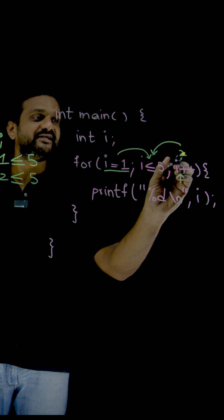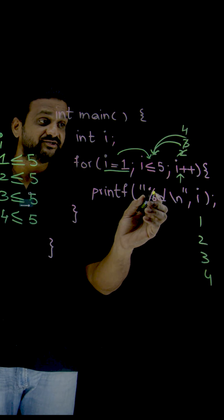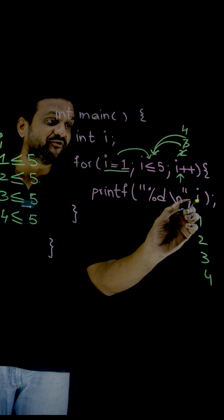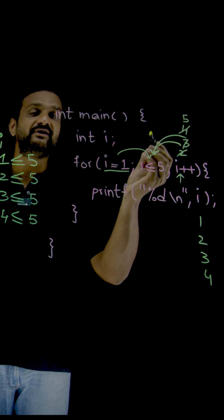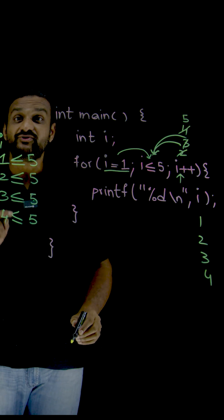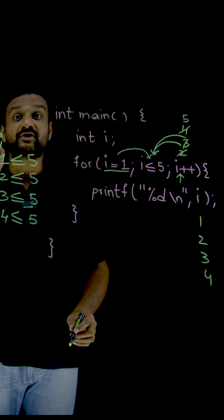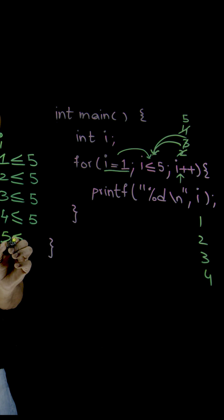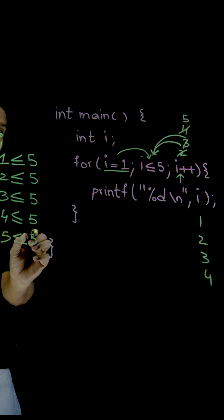Now again the incrementation. So again after completion of all this, the incrementation is done. Now it will be 5. Now 5 less than or equal to 5. Is it true? Yes, it is equal, less than or equal to. So 5 is equal to 5. So this is true.